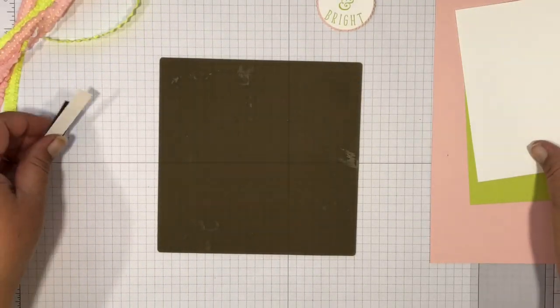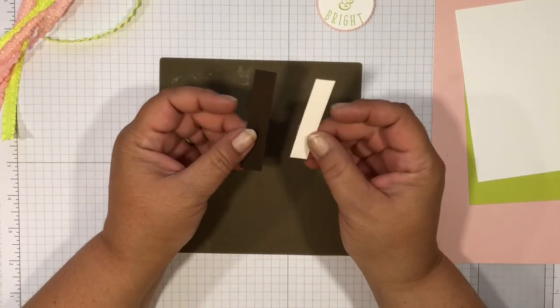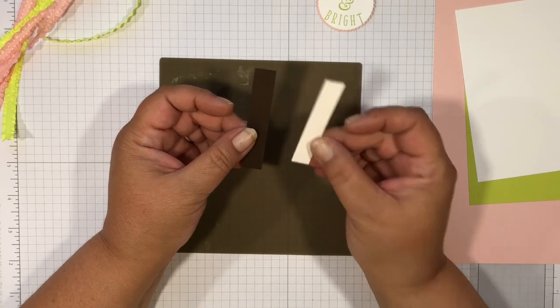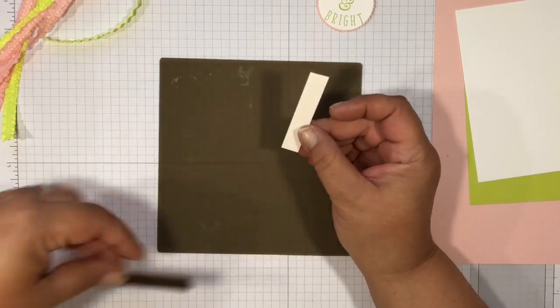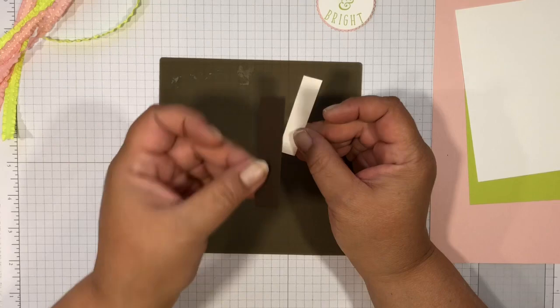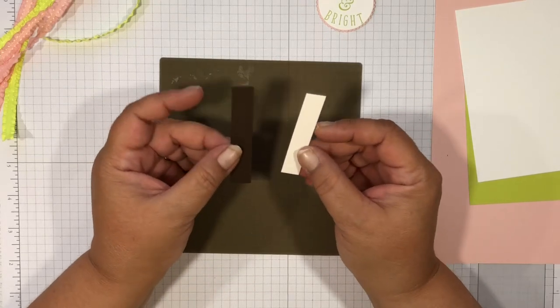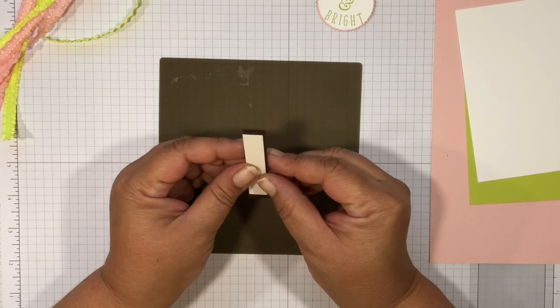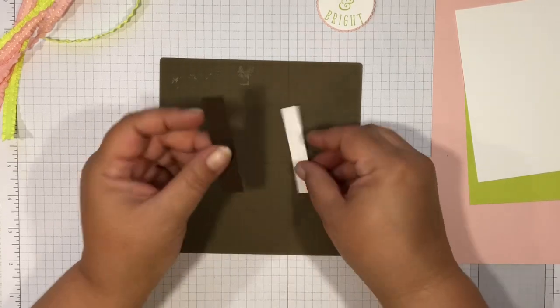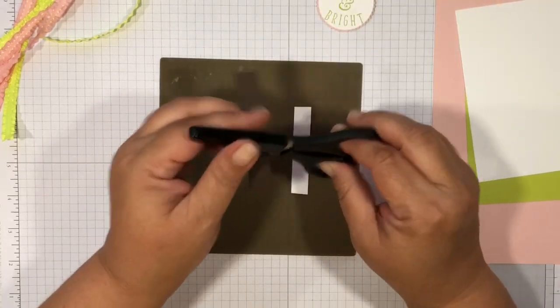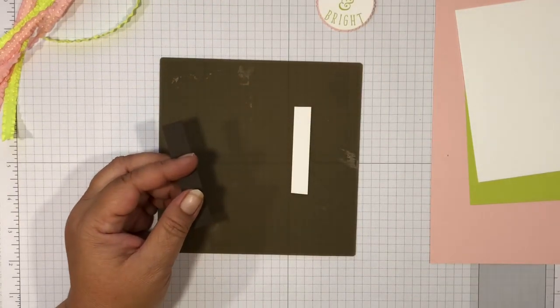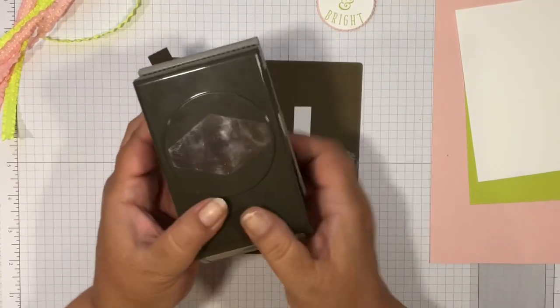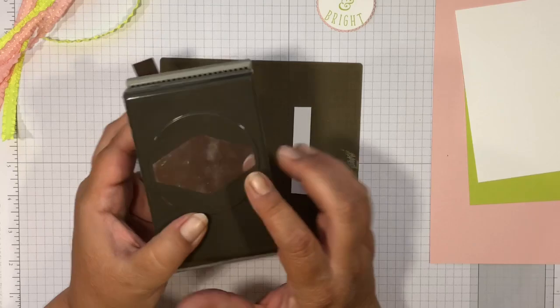The other pieces that we're going to need, this one's about two and three quarters and this one is about three inches and they're a half an inch wide. This one might be just a little bit more than half an inch but that's just because the way I cut it.